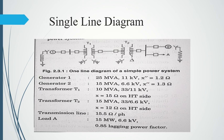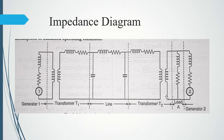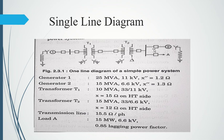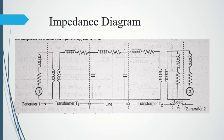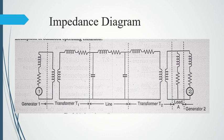After transformer T2, we have Load A — represented with resistance and inductance — and Generator 2, represented as a voltage source connected with resistance and inductance. This is how you draw the impedance diagram of any system that was represented with the help of a single line diagram.